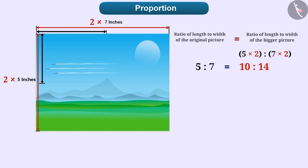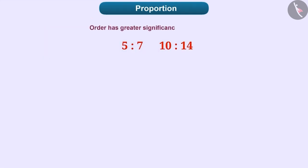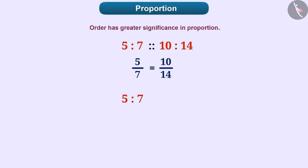If two ratios are equal, then we can say they are in proportion. We use these symbols to denote equality in proportion. Therefore, we can write 5 is to 7 is equal to 10 is to 14, or 5 is to 7 is proportionate to 10 is to 14. Order has great significance in proportion. Here, 5 is to 7 is proportionate to 10 is to 14 because 5 by 7 is equal to 10 by 14. We cannot change the order of proportion and write it as 5 is to 7 is proportionate to 14 is to 10.